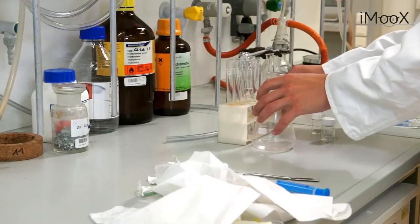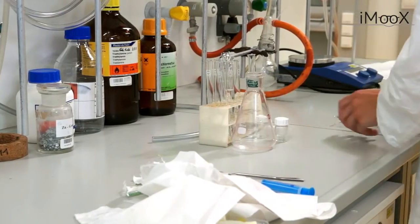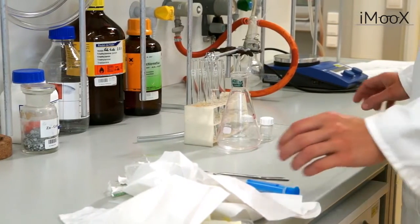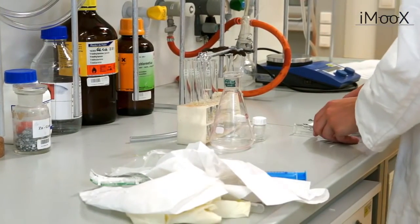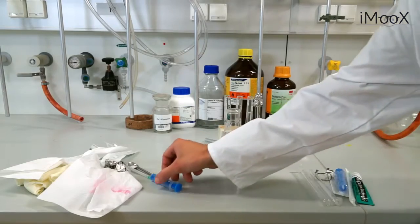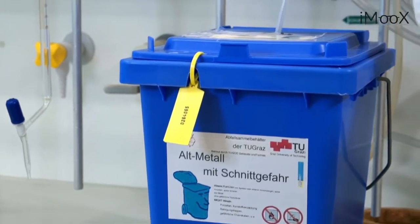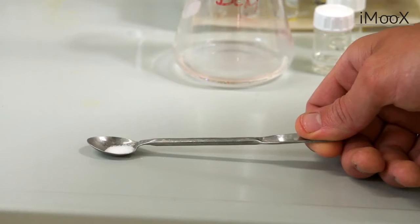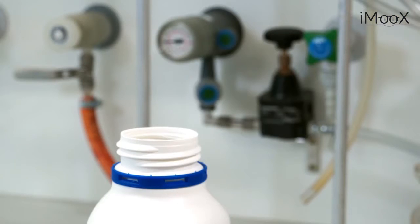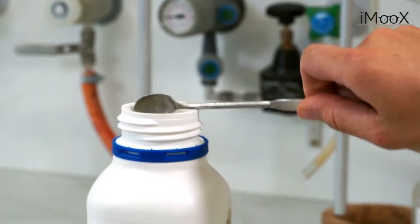Now you should clean up the bench and dispose of any remaining chemicals and waste. There are special containers for the different kinds of waste. For example, there's the container for sharp objects, or for solid chemical waste.